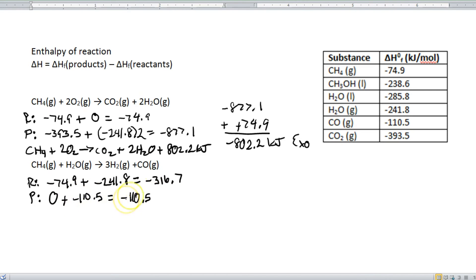Step three, products minus reactants. So, negative 110.5 minus a negative 316.7. Right? Same thing as adding a positive. Okay, so we add that all up, and what we get is a positive 206.2 kJ.